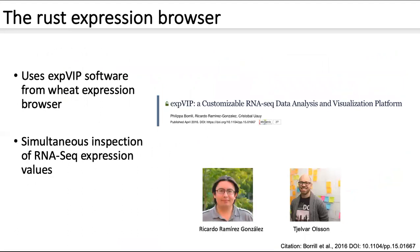The browser was built using open-source ePlant software that Ricardo and Cristobal's group at JIC developed when they were building the wheat expression browser, which some of you might be familiar with. With their help, we've made a few tweaks to make our browser, and we've got it online and running with some help from the informatics team here. The big strength of doing it this way is that we can simultaneously visualise the quantification results for all 1039 samples on the same webpage, without needing any bioinformatic know-how or any specialist hardware or software.